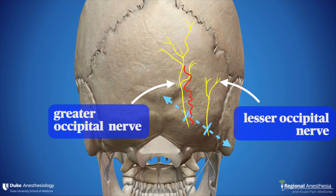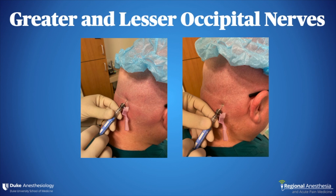The pulsation of the occipital artery is easy to palpate. The palpation of this area may elicit paresthesia. A 25 or 27 gauge needle can be used depending on the size of the patient. The needle is directed 90 degrees towards the occiput. After aspiration, 1 to 3 ml of local anesthetic is injected.